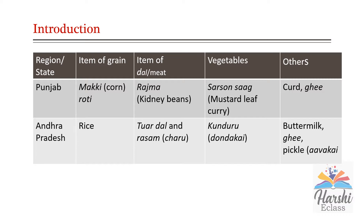Along with rice, one vegetable, buttermilk, ghee, and pickle. So our meals usually have at least one item made of some kind of grains. Along with that, other items could be a dal, vegetable curry, a meat product, and milk products such as curd, buttermilk, ghee, and also some pickles. Sometimes we may not really have all this variety in our meals — it may not be possible for some of us to eat such a variety of items most of the time.